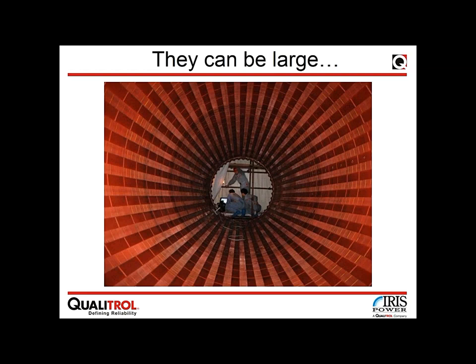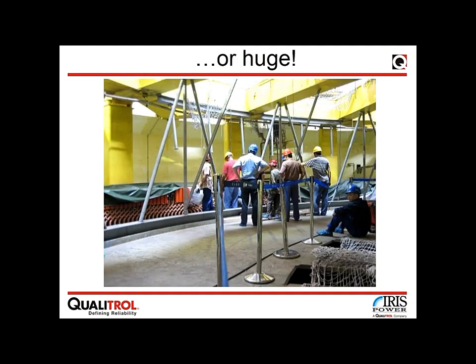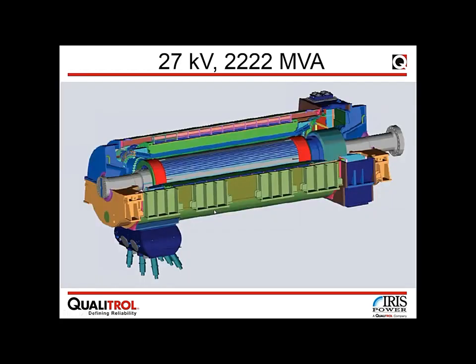Electrical machines can be very large. One picture shows a 900 MW turbo generator, and another shows a fully assembled hydro machine where people are standing on the rotor and stator. The height between the rotor and the top bracket is about 10 feet or three meters — enough space to play basketball inside the large hydro generator.